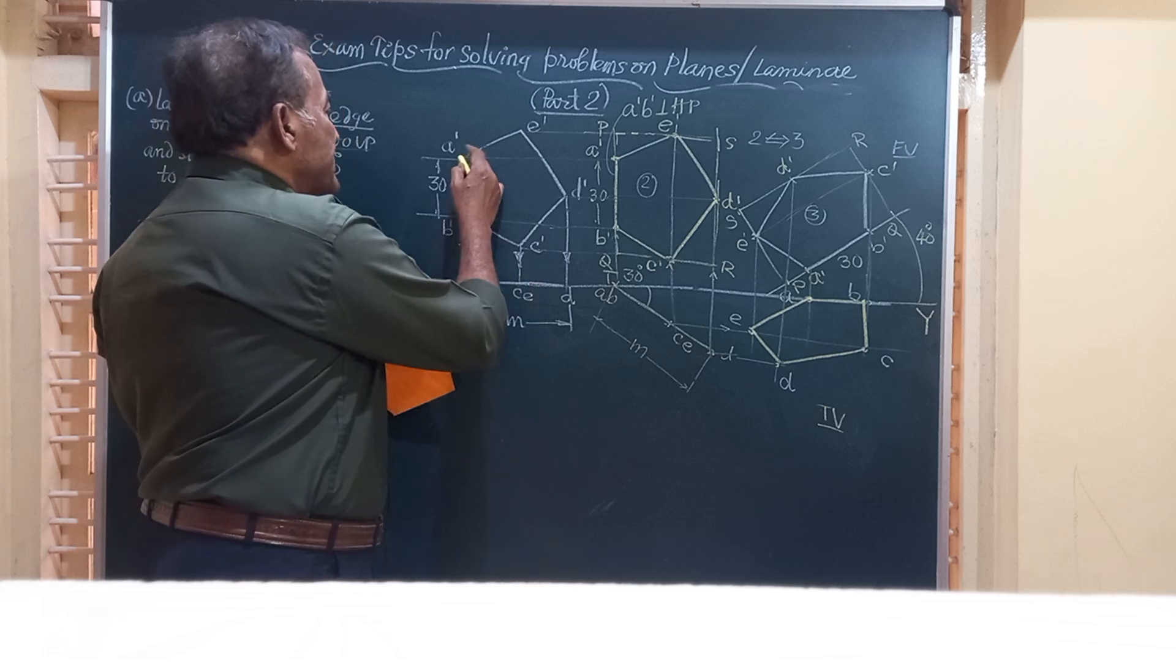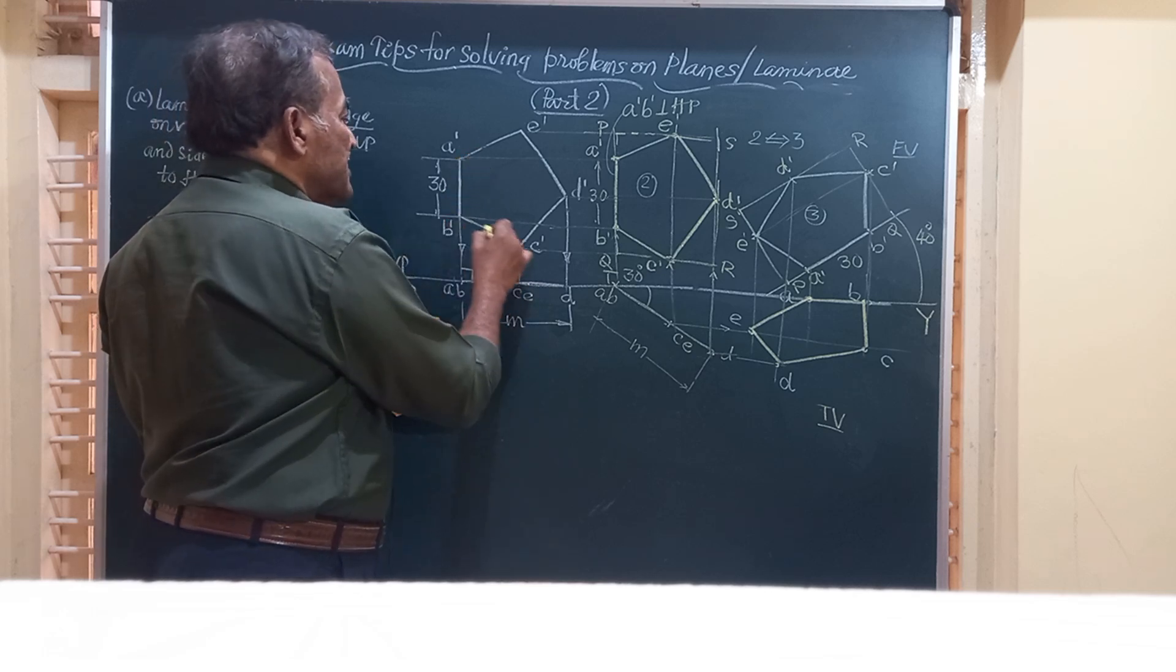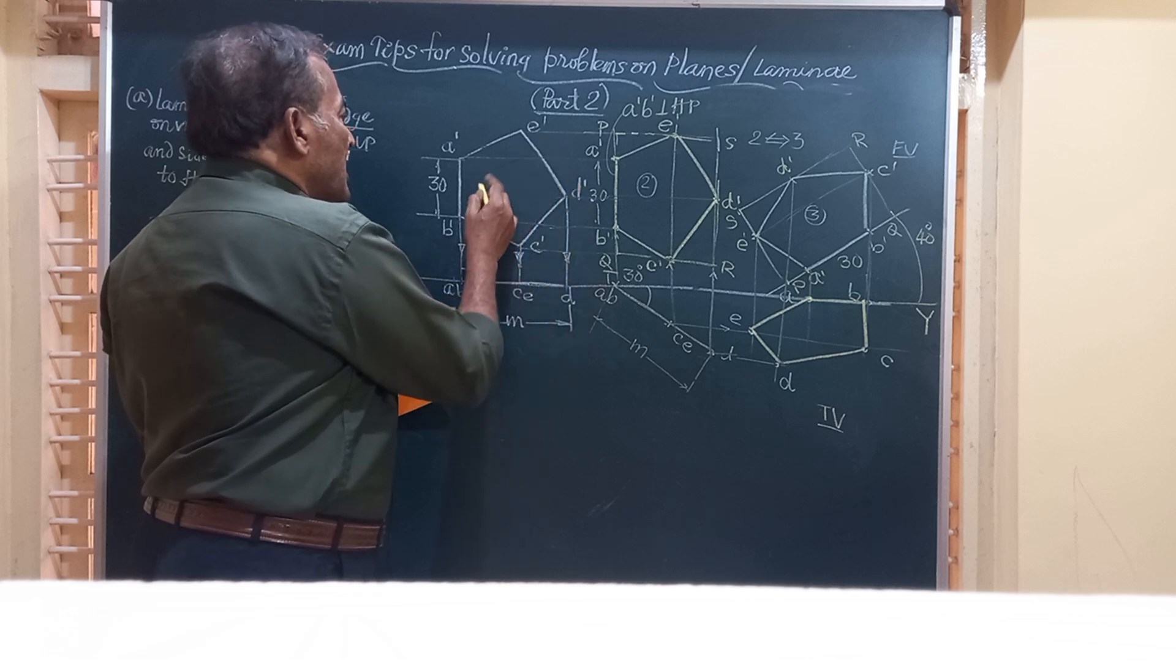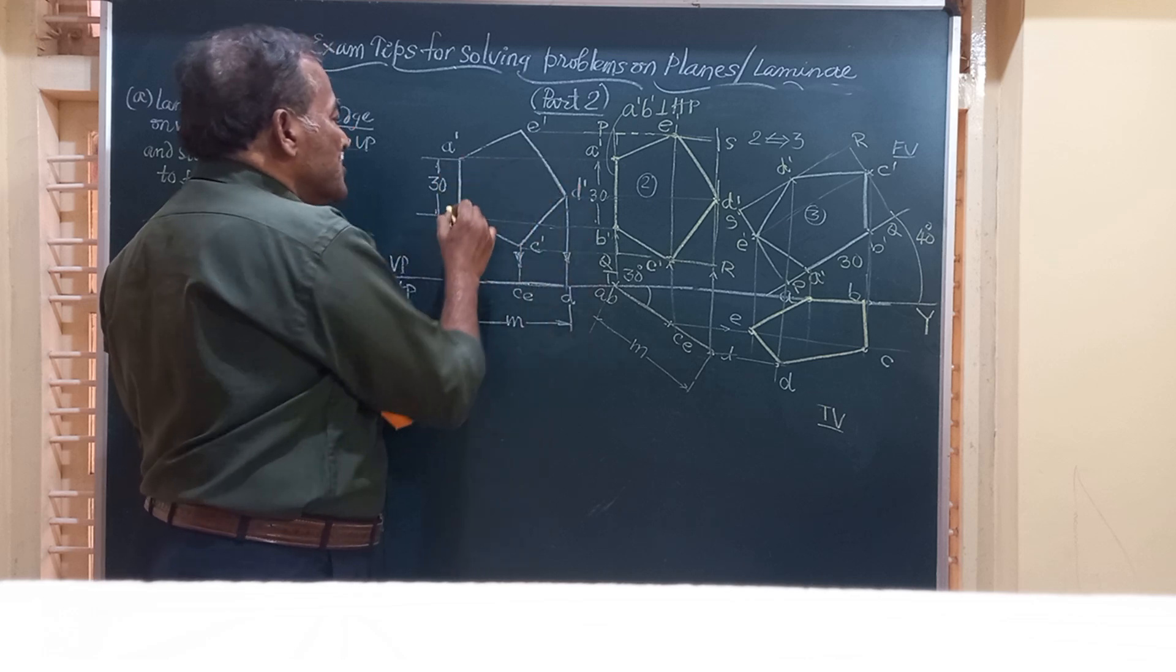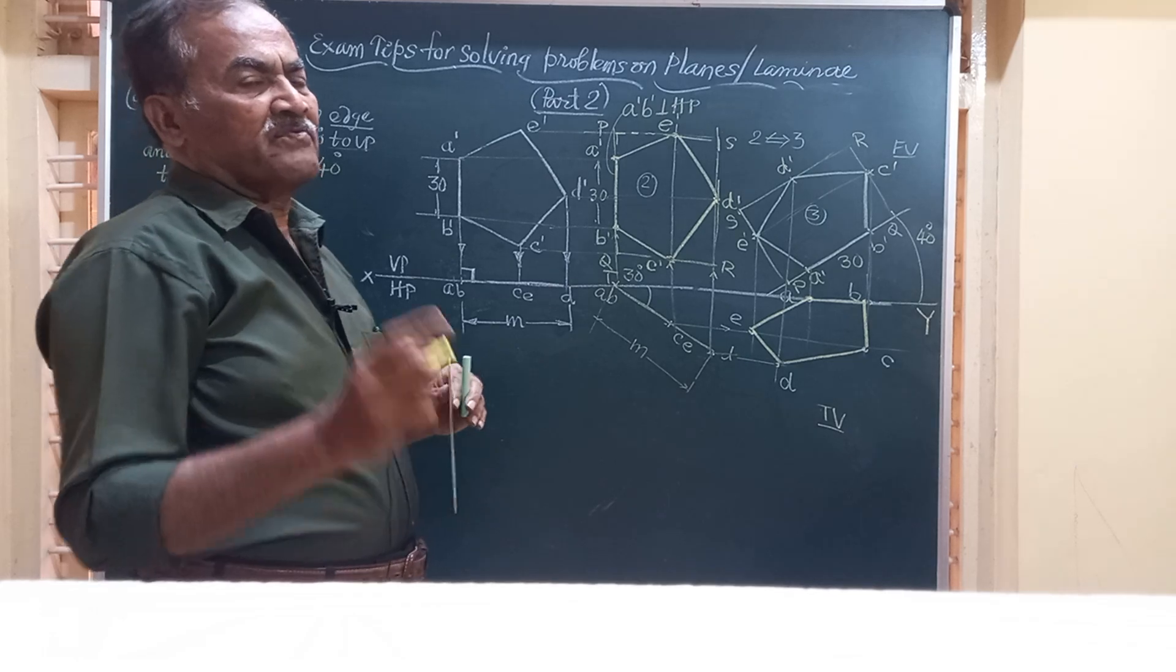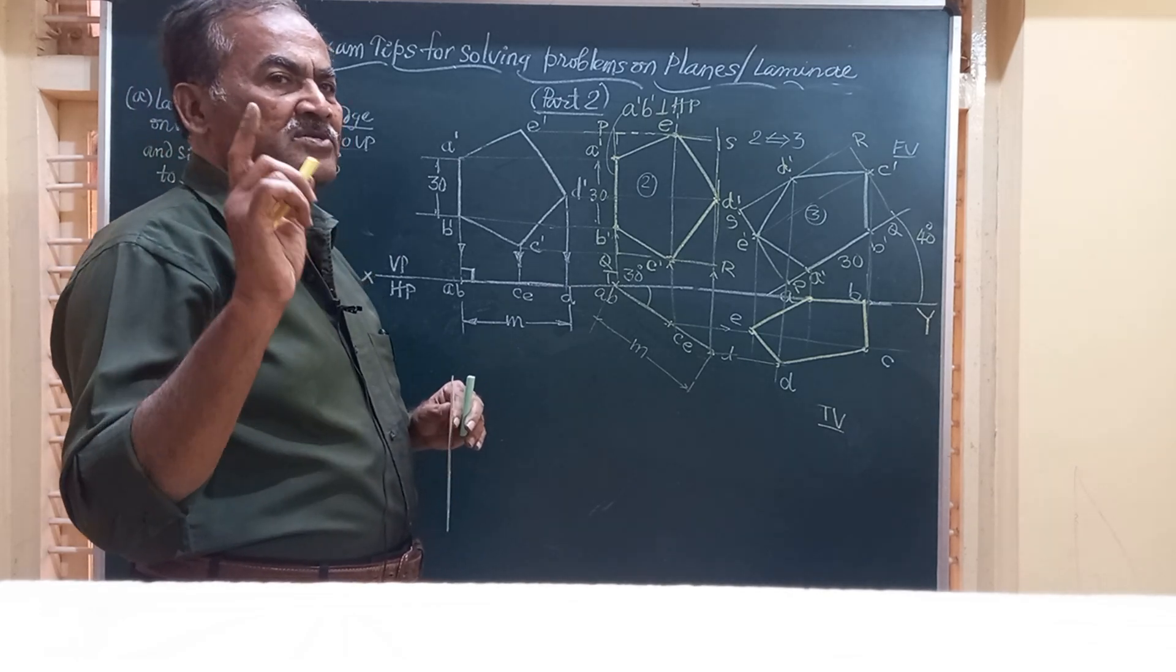Friends, we have to construct this pentagon A' B' C' D' E' and this will have a length equal to 30.